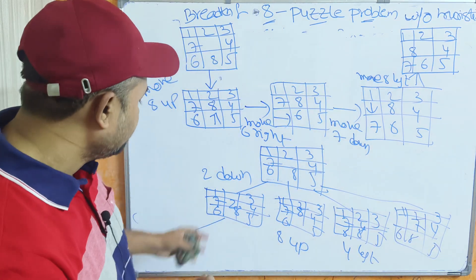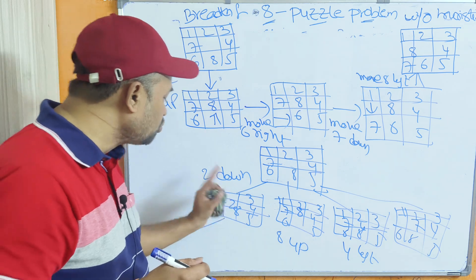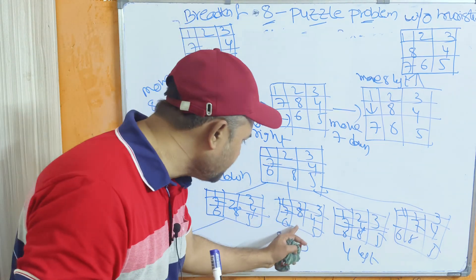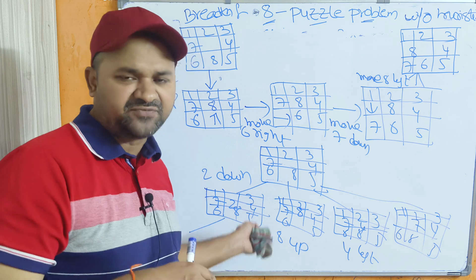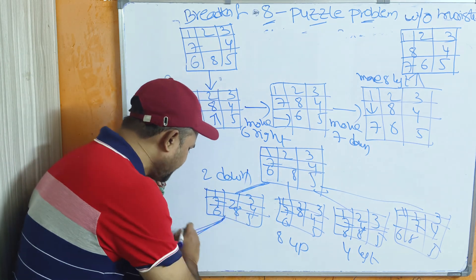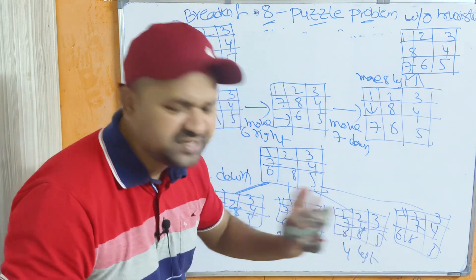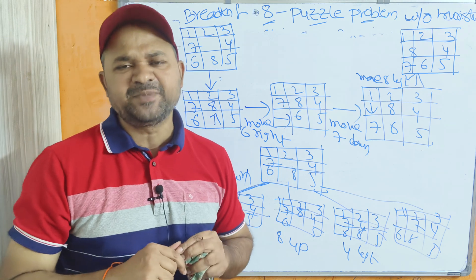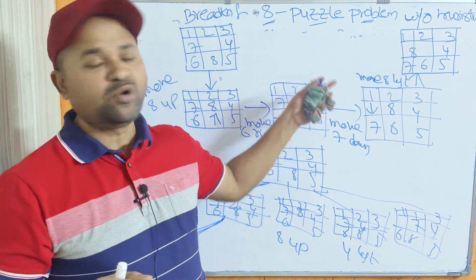From each of these configurations we continue expanding. For example, from one configuration we can get 3 more moves: move 1 right, move 3 left, or move 2 up. From another configuration we get: move 8 down, move 6 right, or move 5 left. So likewise, from each state we will get different states. The path cost at each step is 1. Out of all the paths, we will find the solution with the minimum path cost — that is the objective of the 8-puzzle problem: produce the goal state from the initial state with the least number of moves.